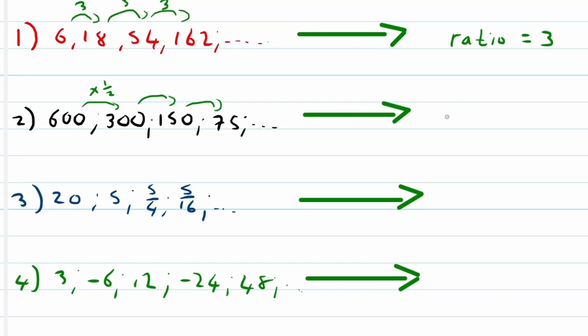So 600 times a half is equal to 300, 300 times a half is equal to 150, 150 times a half is equal to 75. Therefore we can say the constant ratio is equal to a half.